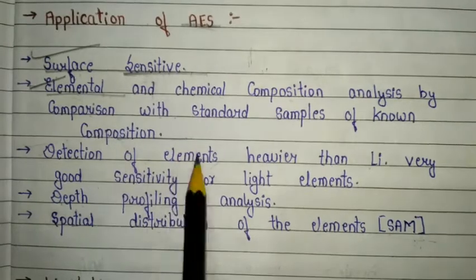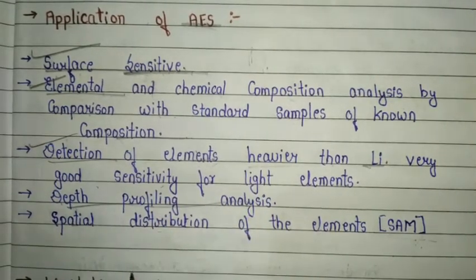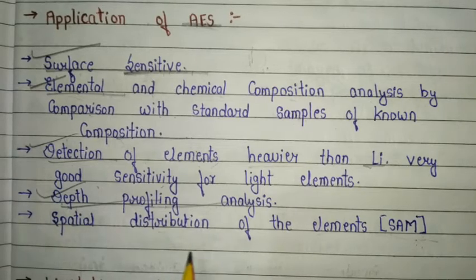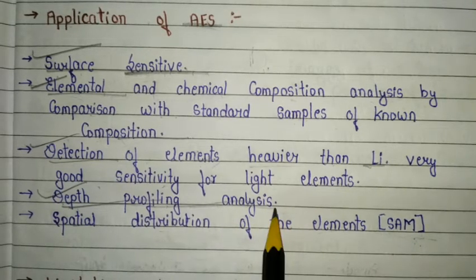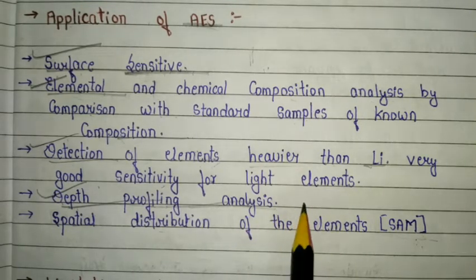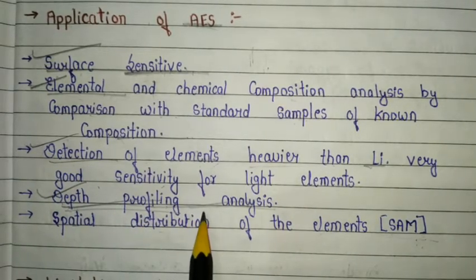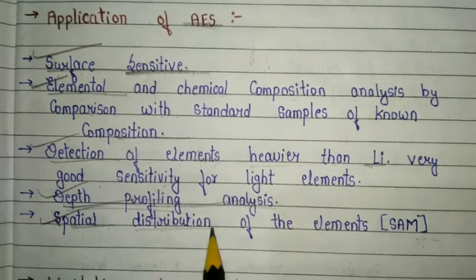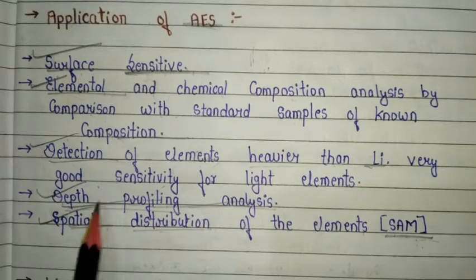The second important application is elemental and chemical composition analysis — by comparison with standard samples of known composition. Third is detection of elements heavier than lithium, with very good sensitivity for light elements. Fourth is depth profiling analysis, where the elemental or chemical content of a sample is measured as a function of depth, using a beam of ions such as O2+, Cs+, or gallium. Fifth is spatial distribution of elements using SAM — Scanning Auger Microscopy — which is based on the Auger effect.